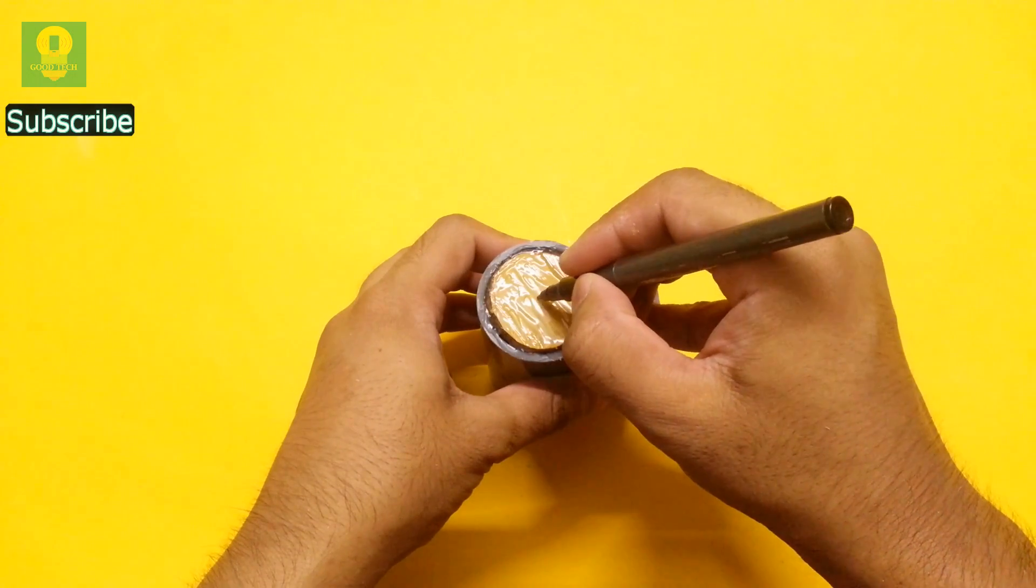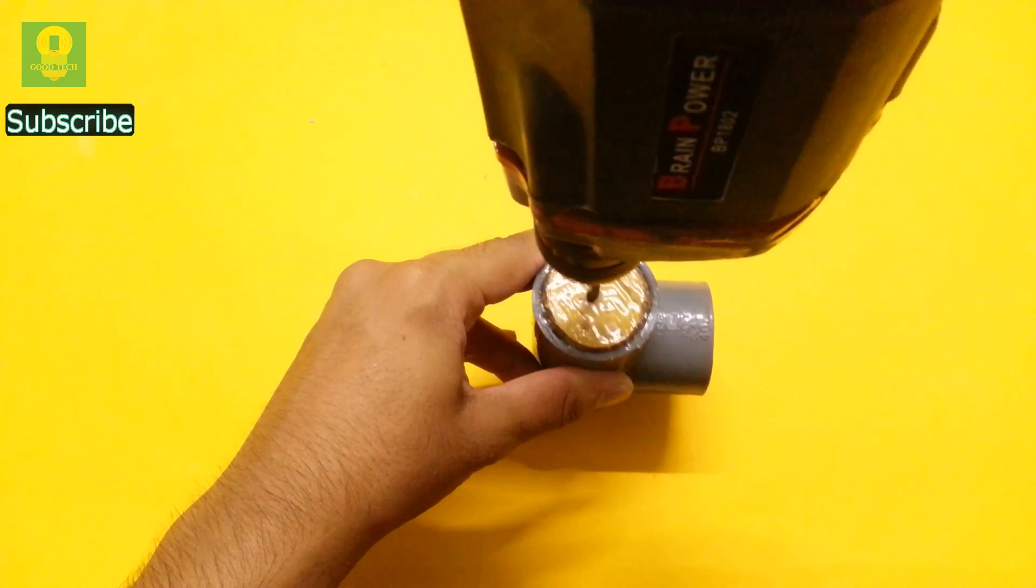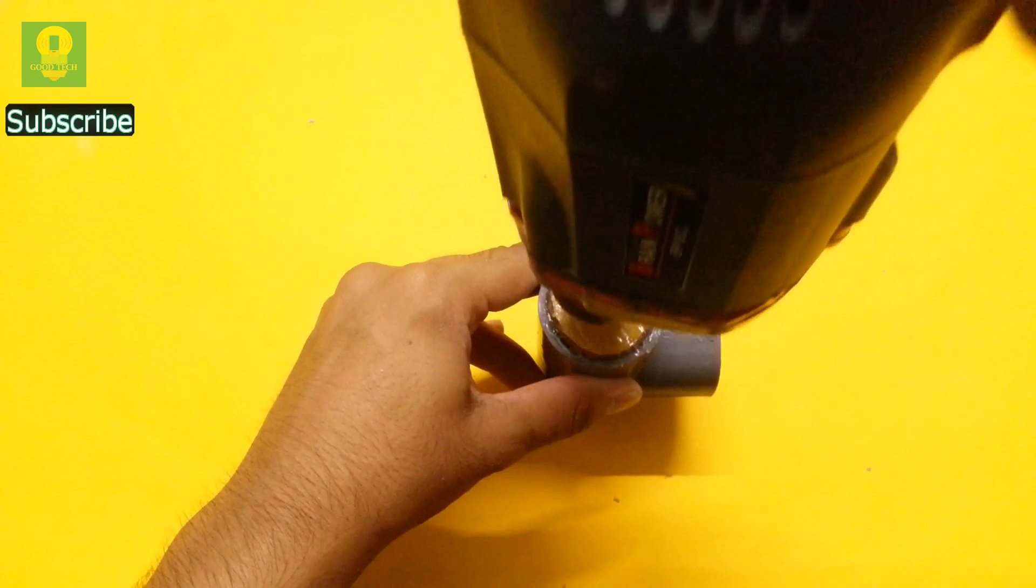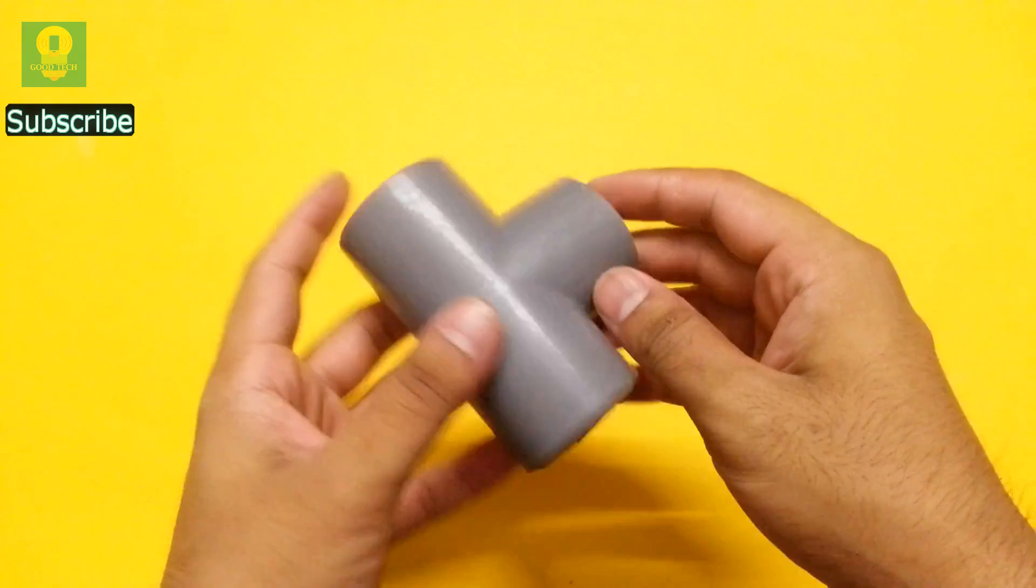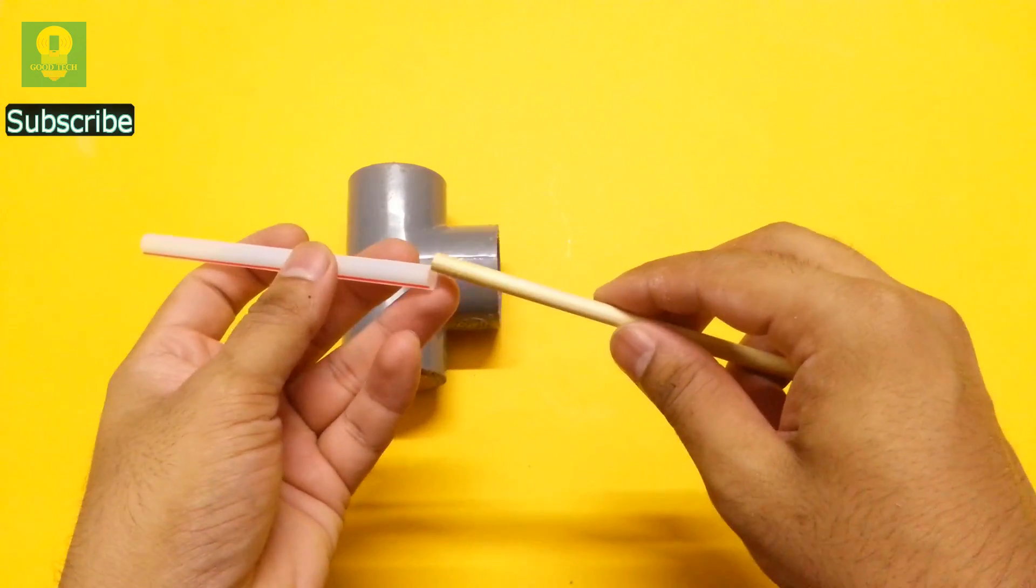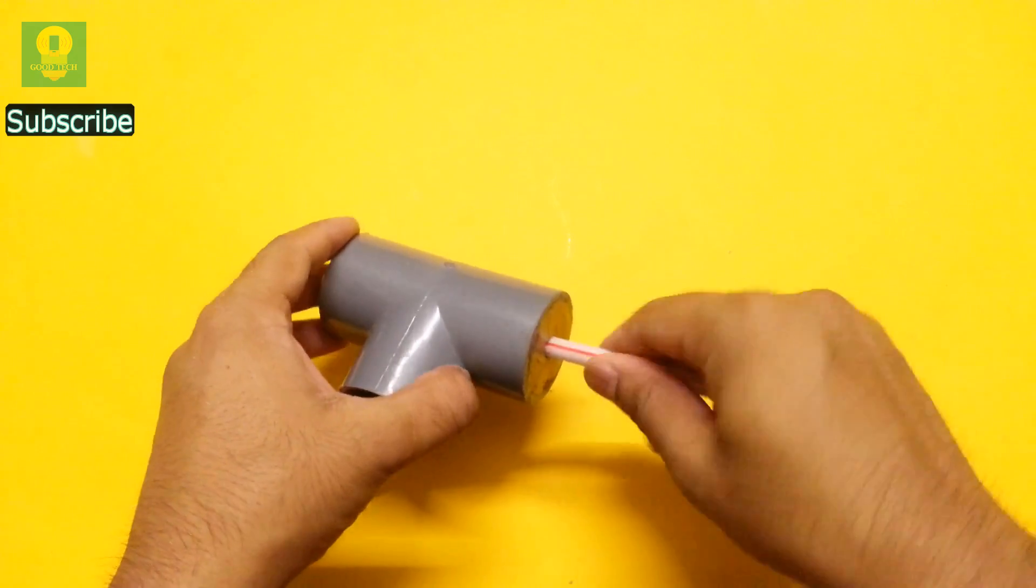Mark a center point and drill a hole at the mark point. Make similar holes on both sides. Take a wooden stick and a straw. Insert the stick in the straw and pass them through the holes in the PVC tee.